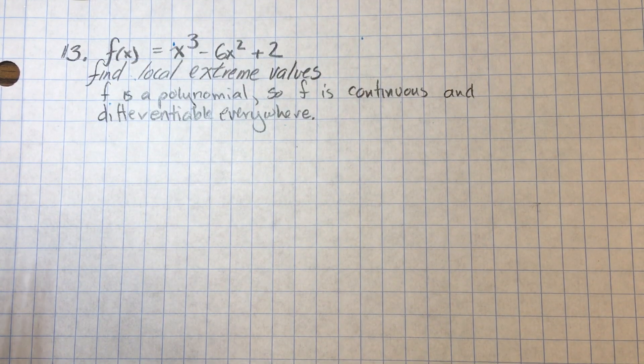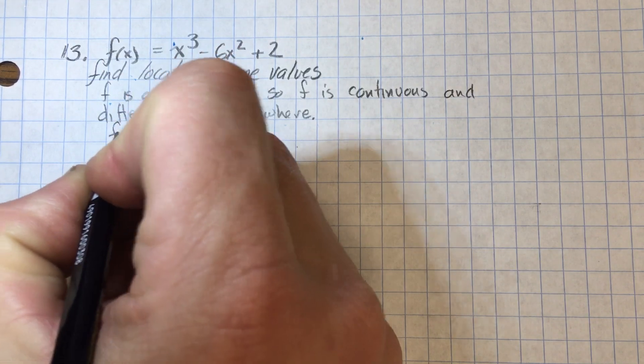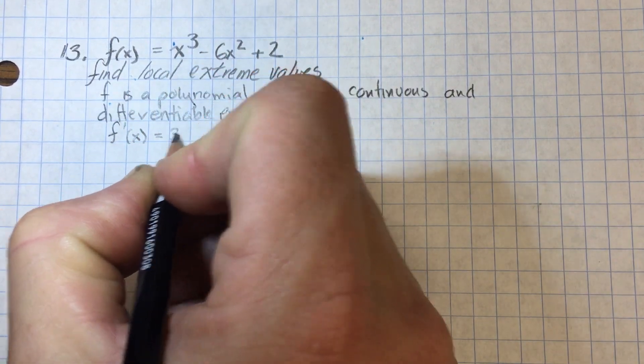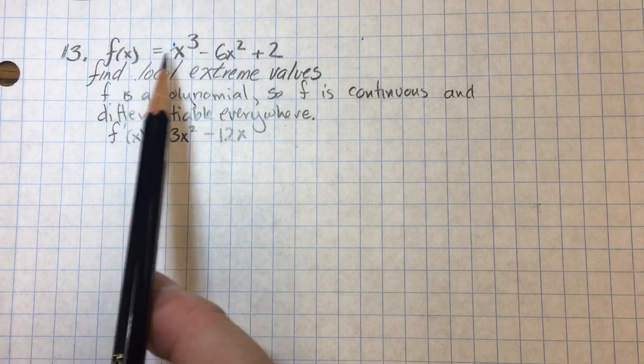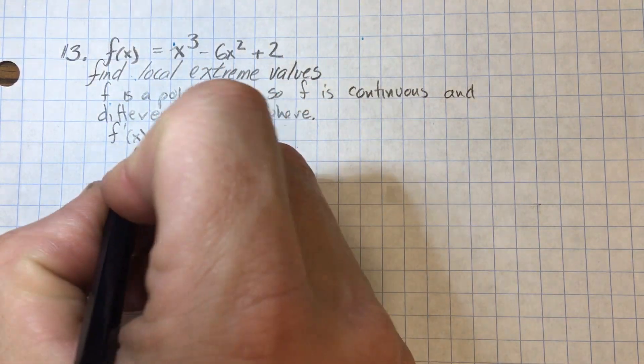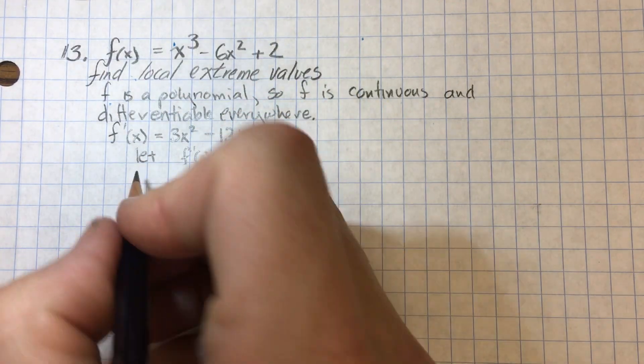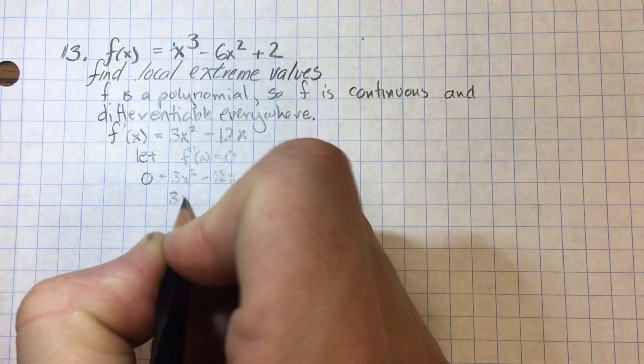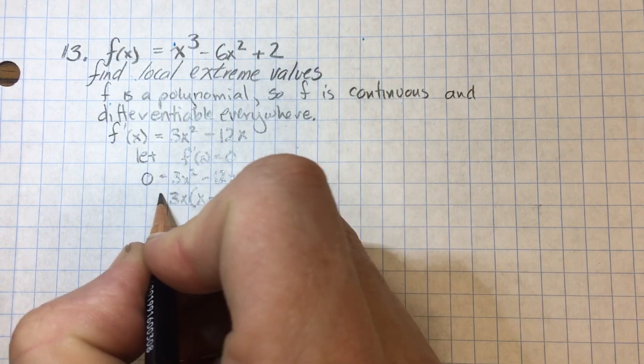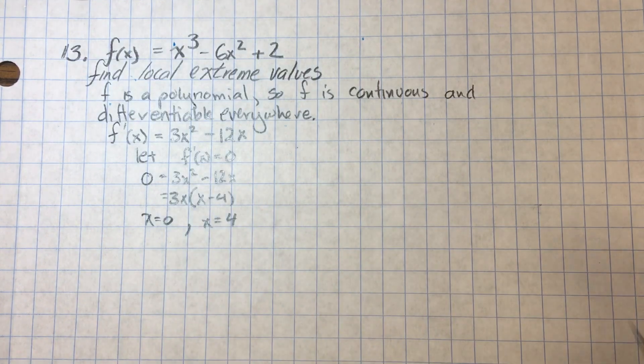So you should know by now, a continuous function can only have a local maximum or minimum at a critical value. That's where my first derivative is equal to zero or undefined. My first derivative should be pretty easy, that's just some power rule stuff. We're going to let F prime equal zero, looking for the critical values. And then some factoring. Hopefully you can see X is zero and X equals four are our two critical values.